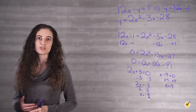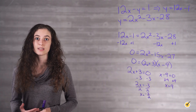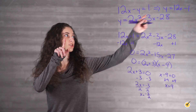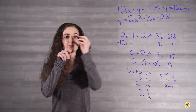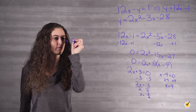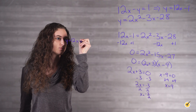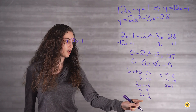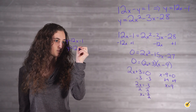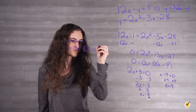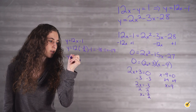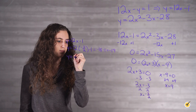These are our x values for our two points of intersection. Now we want to find our y values, so we're going to take our linear equation y equals 12x minus 1 and plug in our x value of negative 3 halves, and then plug in our value of x equals 9.